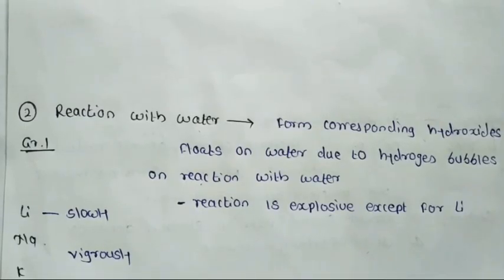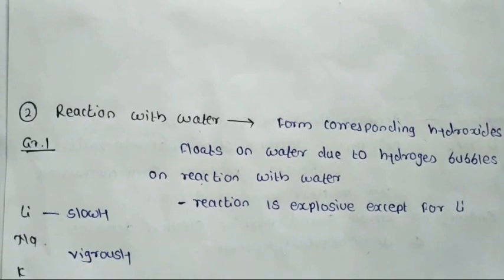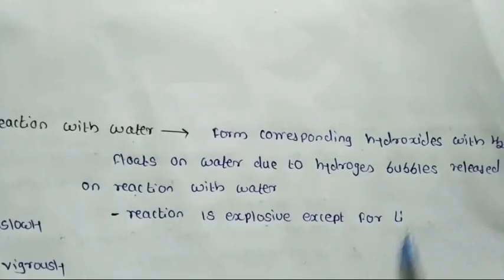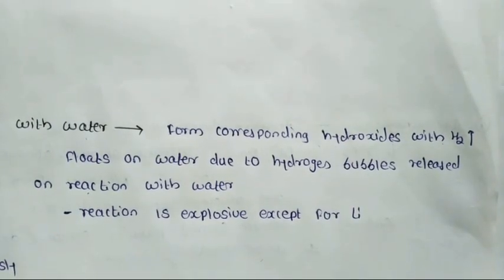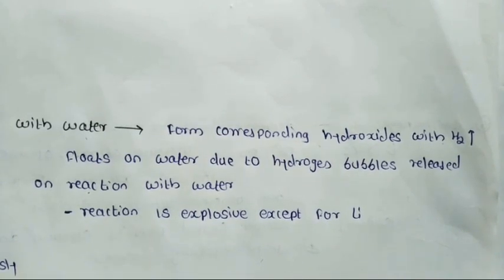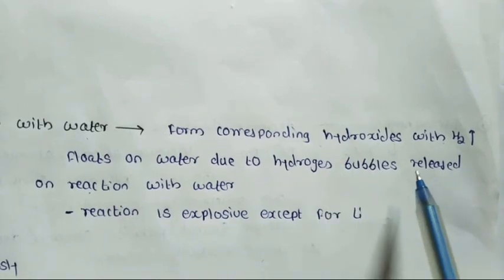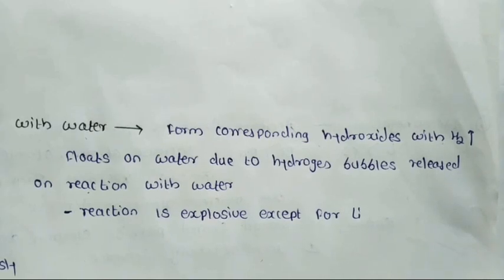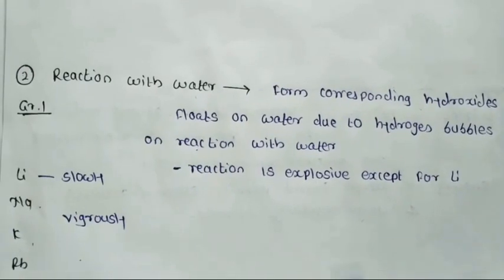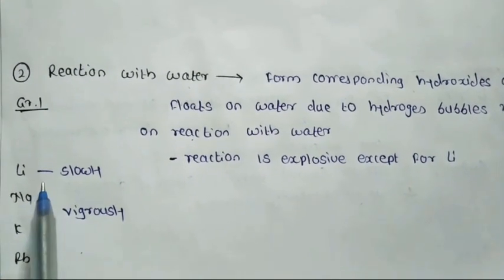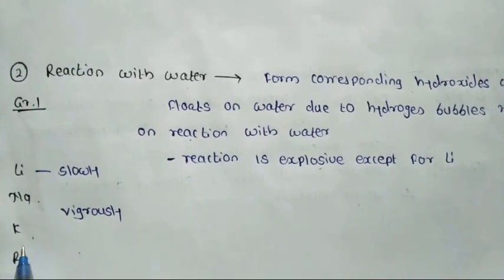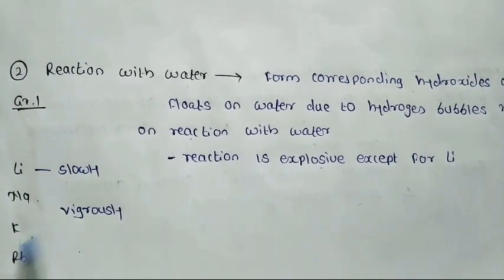Now we see the second chemical reaction: reaction with water. Alkali metals and alkaline earth metals react with water to form the corresponding hydroxide with evolution of hydrogen gas. In alkali metals, the first three elements — lithium, sodium, and potassium — all float on water due to hydrogen bubbles released on reaction with water.